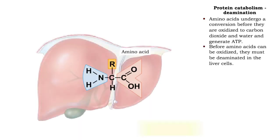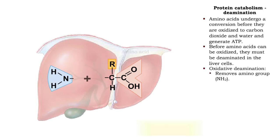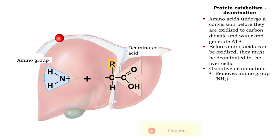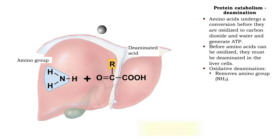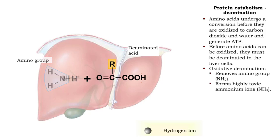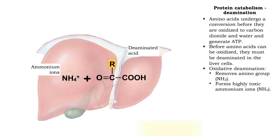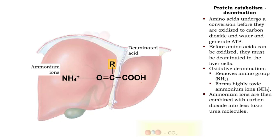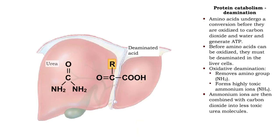Amino acids in the liver cells must first undergo oxidative deamination. During this process, the amino group NH₂ is removed. Deamination forms highly toxic ammonium ions. The ammonium ions are combined with carbon dioxide into less toxic urea molecules, which are excreted in urine.